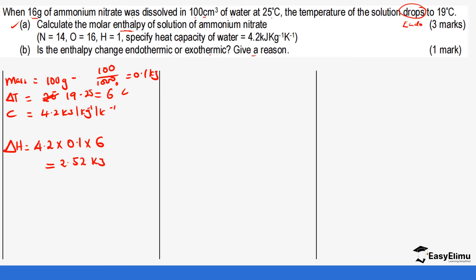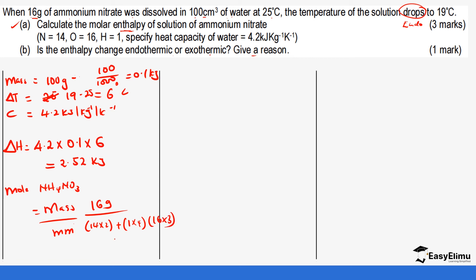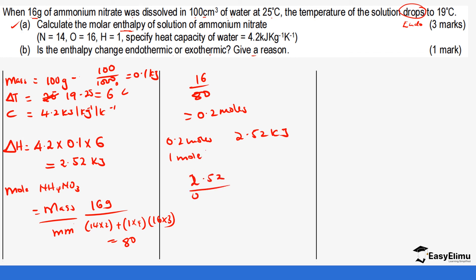Now we need the moles of ammonium nitrate that took part in the reaction to find the molar enthalpy. Moles equals mass over molar mass. The mass of ammonium nitrate is 16 grams. The molar mass is: 2 nitrogen (14 × 2) + 4 hydrogen (1 × 4) + 3 oxygen (16 × 3) = 80 g/mol. So moles = 16 ÷ 80 = 0.2 moles. Since 0.2 moles produces 2.52 kJ, 1 mole produces 2.52 ÷ 0.2 = 12.6 kJ/mol.